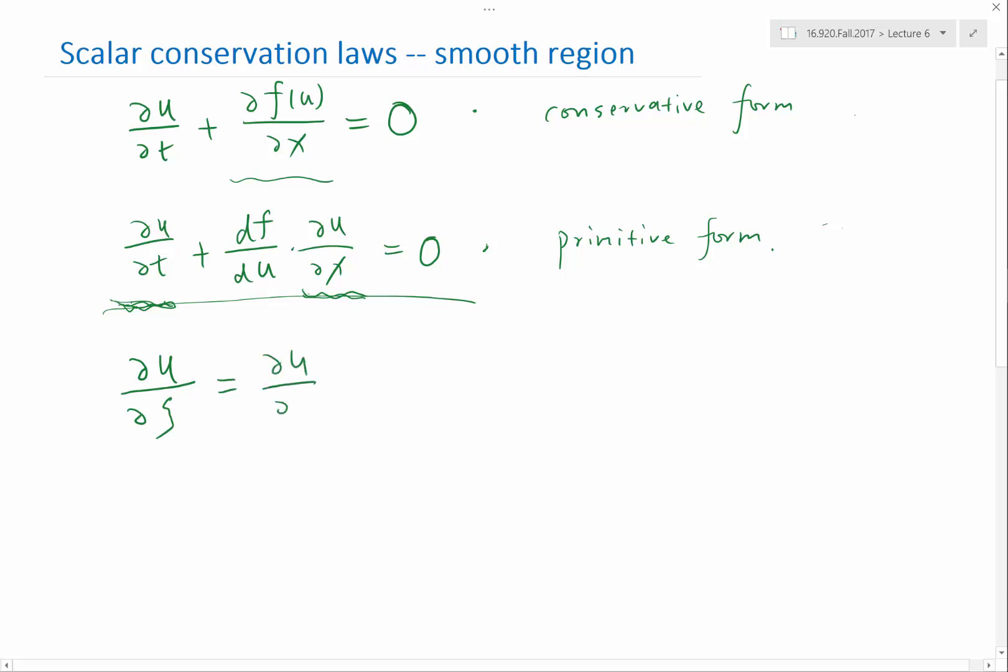That can be just written as partial u partial t plus df/du times partial u partial x. The answer is sure you can, if I have partial derivatives, that is partial t partial c is equal to one, and partial x partial c is equal to df/du. So if I have this, then this would be just a chain rule.